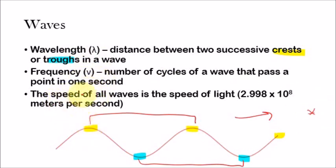Now, an interesting property of waves is that the speed of all waves is the speed of light — 2.998 times 10 to the 8th meters per second. So all waves have the same speed. You might be confusing frequency and speed. Speed is basically how fast it travels — how much distance it covers. Frequency is the number of oscillations in a given second — the number of times it's going up and down in a given second. That's the difference.